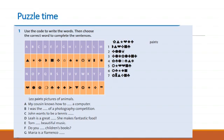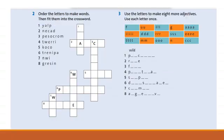For example: Leo paints pictures of animals. Exercise 2: order the letters to make words, then feed them into the crossword. Exercise 3: use the letters to make 8 more adjectives, use each letter once.